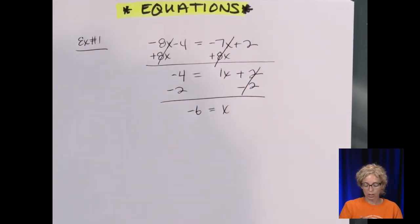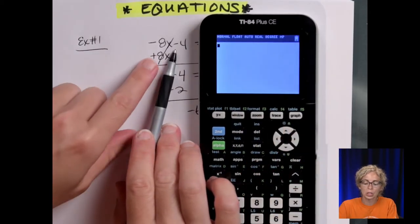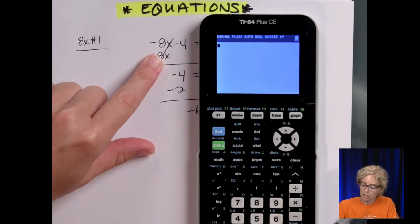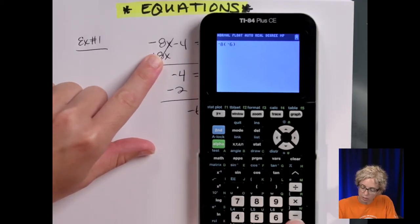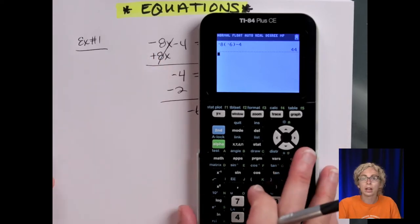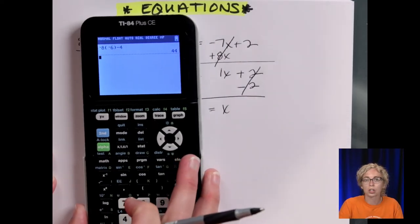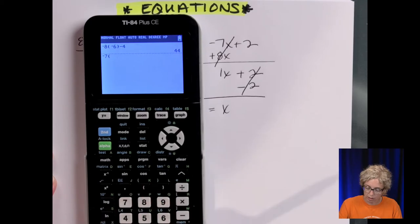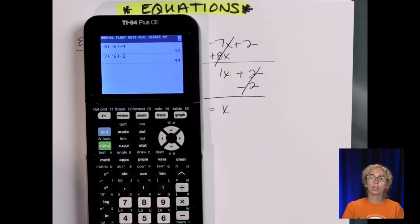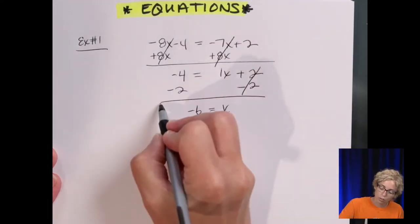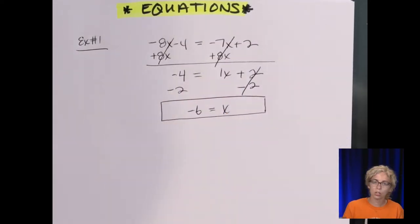And then I get x = -6. Now you can check yourself on the calculator. You would want to type in each side of the equation, so each expression. Type in -8 times -6 minus 4, and then type in the right side of the equation, -7 times -6 plus 2, and we get 44. So we know we are correct. So no need to check unless it says to, but it's always a good idea to check so that you know that you have the right answer.